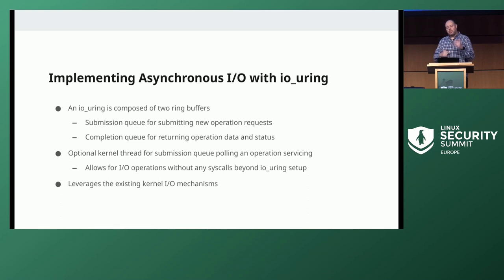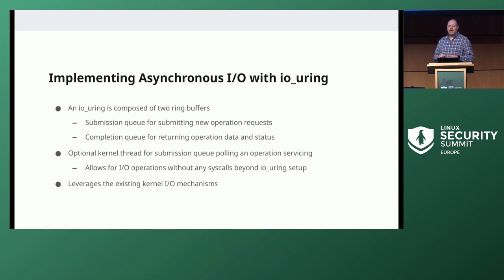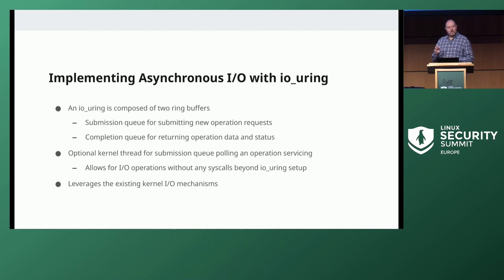There's also an optional kernel thread that polls the submission queue and whenever it sees a new submission, pulls it off, processes it, and dumps it onto the completion queue. What's neat about that is you can do I/O without any syscalls once you've established the IOU Ring. You just write your request into a structure, put it on the submission queue, and the kernel thread will pick it up and do your work. It allows for some really impressive performance numbers.